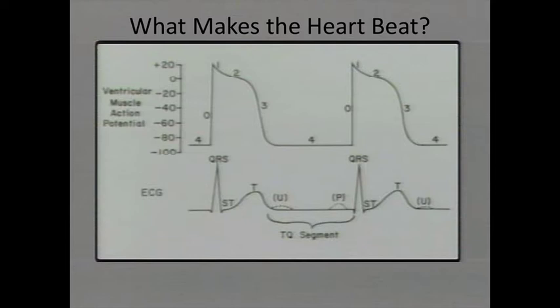In phase zero, we see that steep climb on the picture. An action potential begins when the threshold potential is reached — gated sodium ion channels on the plasma membrane become activated and open. Sodium then pours into the cell, causing this rapid depolarization, which is why it spikes so quickly. We lose our membrane potential. The sodium channels open and close rapidly, and for that reason they are sometimes referred to as fast channels — they're called fast because they open and close quickly.